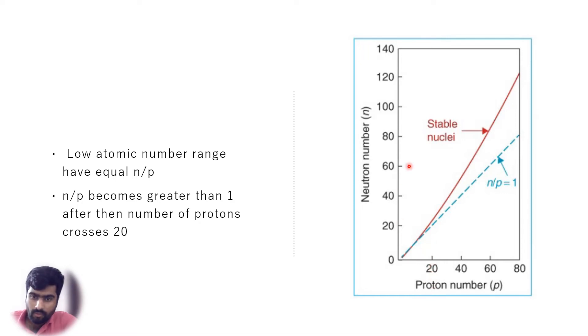Now let's take the proton number at 20. If you take a closer look at this graph, you can see there are two lines here: one is of stable nuclei and one is a hypothetical nuclei where N by P ratio is one. You can see there's a skew, a change in both graphs after the proton number crosses 20. As it increases beyond 20, the neutron to proton ratio for stable nuclei becomes greater than one.